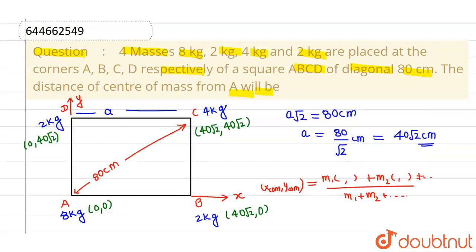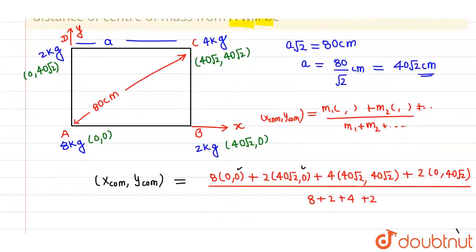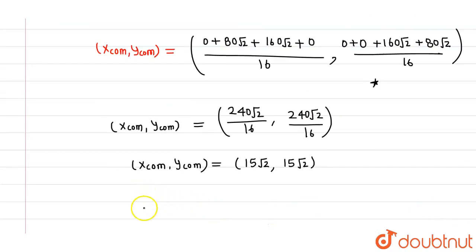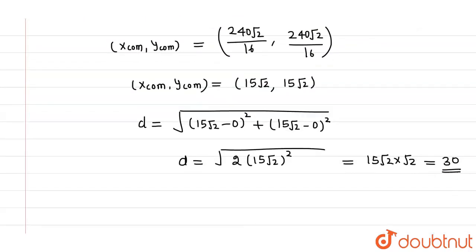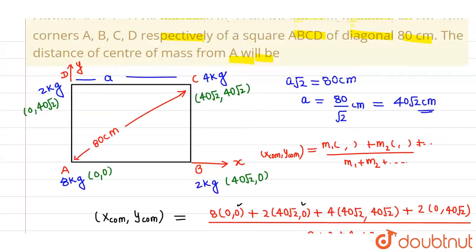Now, at last, we have to find out the distance of center of mass from A. So A is (0,0). Distance will be given by d, which is √[(15√2 - 0)² + (15√2 - 0)²]. So this will be √[2 × (15√2)²], which can be written as 15√2 × √2. So in short, the distance comes out to be 30 cm. I hope you understood. Thank you.